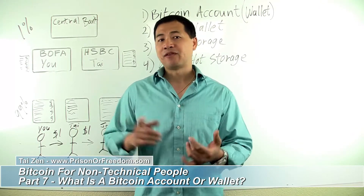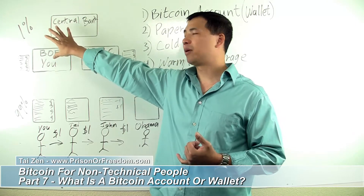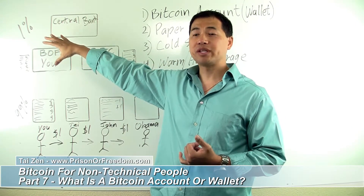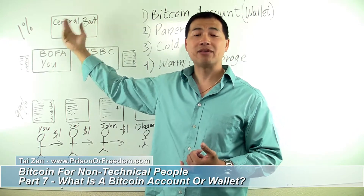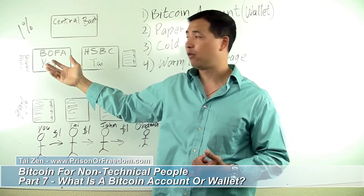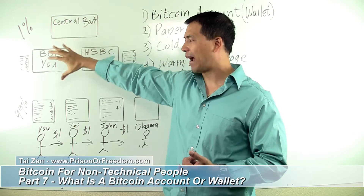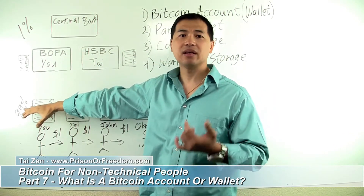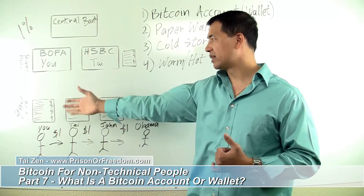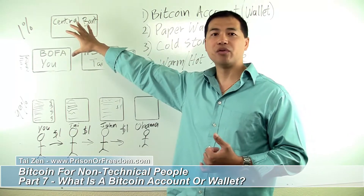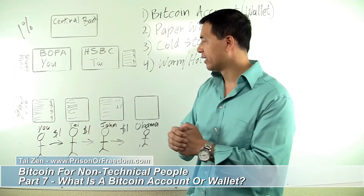In the first video, I talked about the difference between the 1% that's on Wall Street that control all the money — that can print money at will without ever having to work for it or give people value for it — and how they control the power over the 99% of people like you and I on Main Street, because they're the ones holding the money and printing the money.